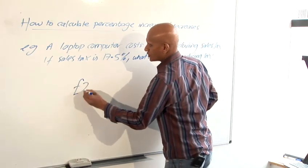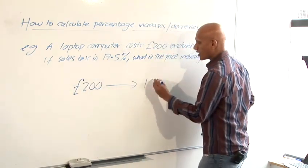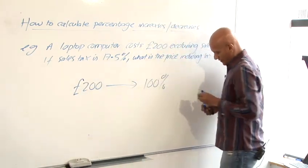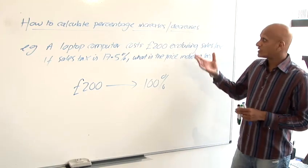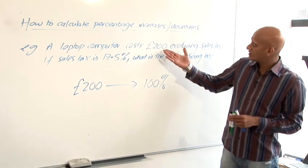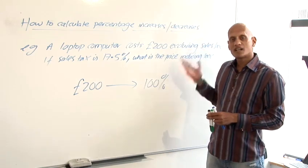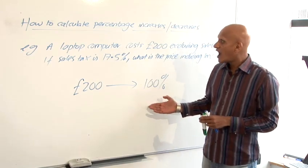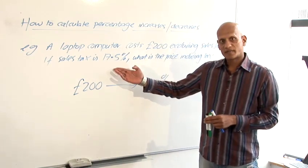So I start off by saying 200 pounds goes to 100%. 100% is the original price which in the case of sales tax means the price before any taxes have been added on. So in this case 200 pounds is before any taxes have been added on so that's assigned 100%. I want to add 17.5% to it.